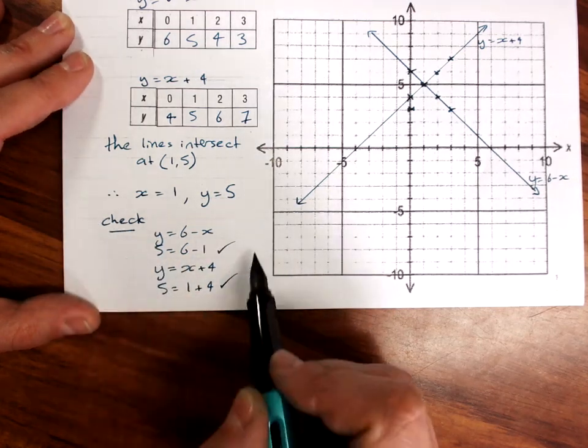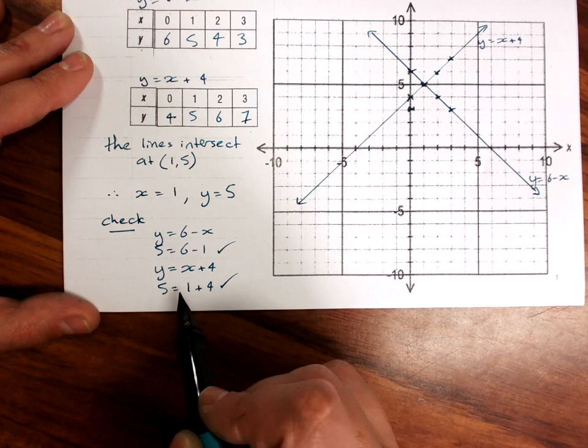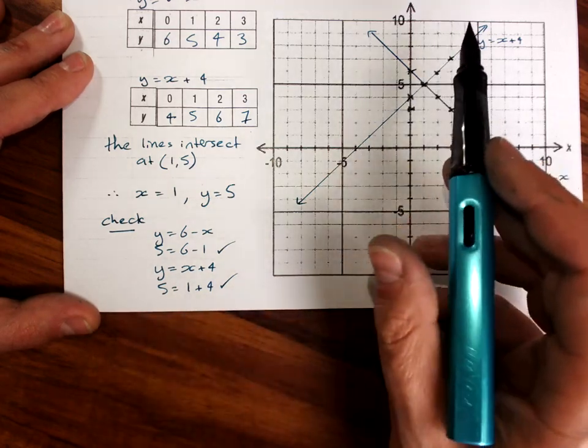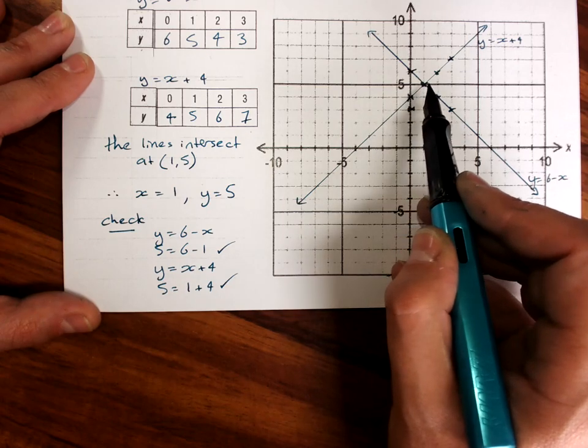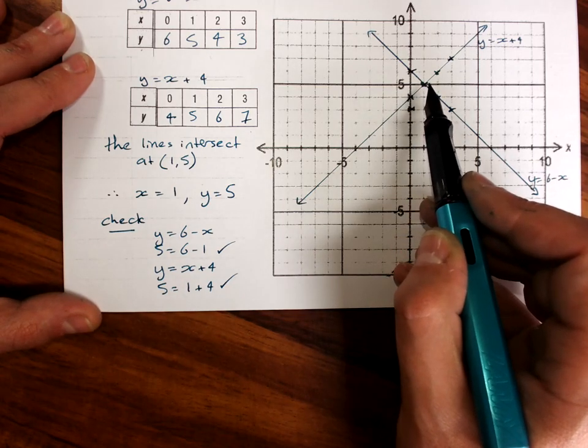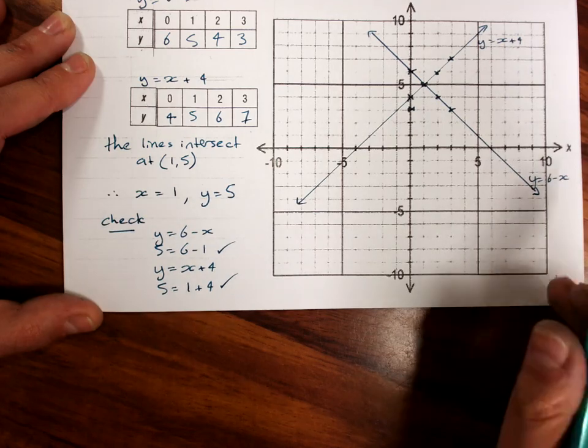This is an important part of the working and the solution when you have got an answer graphically because it shows that you're not just 0.1 out and that you do, in fact, have the exact answers.